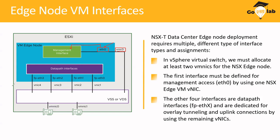The remaining interfaces — VNIC1, VNIC2, VNIC3, and VNIC4 — correspond to ETH1, ETH2, ETH3, and ETH4. Because it's a Linux operating system, the way Linux enumerates network interfaces is always as ETH1, ETH2, ETH3, ETH4.